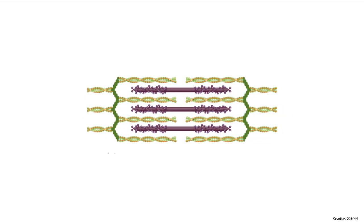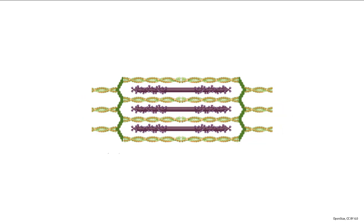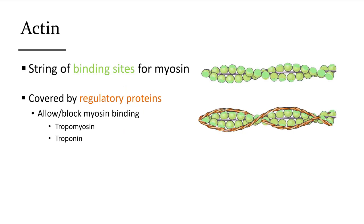Actin strands are made of a series of beads, each with a binding site for myosin. When myosin binds, contraction occurs. To control when myosin binds, there are regulatory proteins — like little brown ropes — covering up the binding sites. Uncovering and re-covering these binding sites on actin is what starts and stops force production.